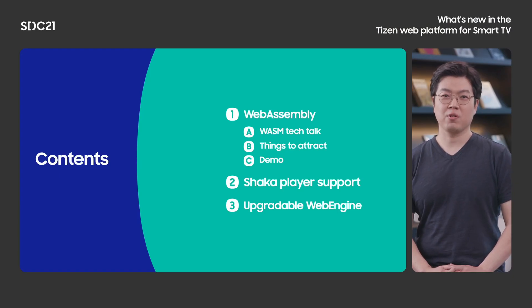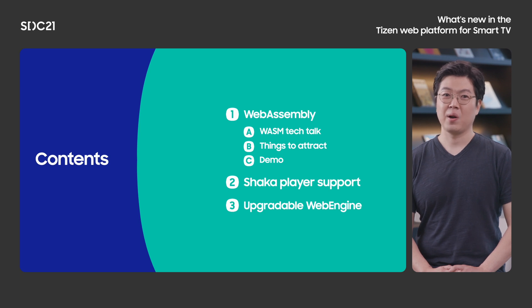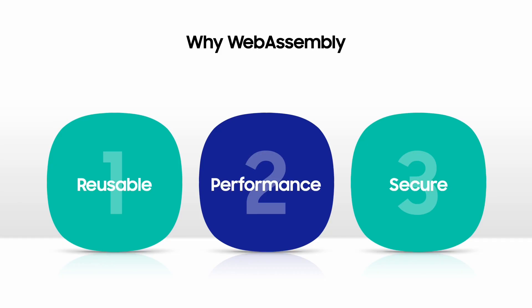We at Samsung continually look for ways to enhance our leading edge product and to improve the user experience. Three ways we are doing that with Tizen TV are web assembly optimized for TV compatibility, compatibility with the Shaka player, and an upgradable web engine. We sell tons of TVs every year, so that's why you want to launch your app on Samsung TV. Samsung TV is built upon the Tizen platform which is very stable and making use of cutting edge features. Web assembly is one of those features.